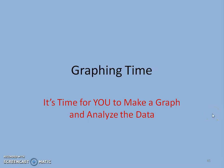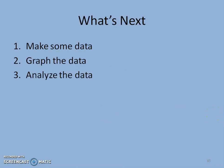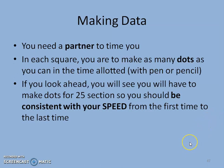Now you're going to make your own graph and then analyze that data. You're going to make the data, graph it, and then analyze it. You're going to need a partner. Make sure you understand that you're going to be graphing from two seconds all the way to 25 seconds. Make sure that you're consistent with your speed — if you go really fast at two seconds, be consistent with that speed at the 25-second section. Do the best you can staying in the boxes.